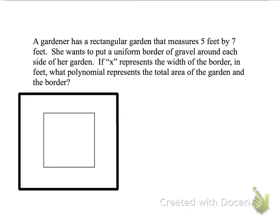A gardener has a rectangular garden that measures five feet by seven feet. She wants to put a uniform border of gravel around each side of her garden. If X represents the width of the border in feet, what polynomial represents the total area of the garden and the border?